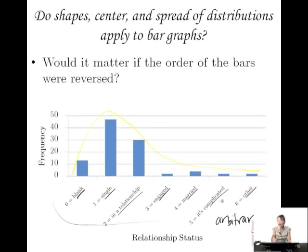There's no rule that says that we have to put these values in this order, because being blank, single, in a relationship, engaged, married, complicated, other, it doesn't really have a set order that corresponds to numbers. We might have some sort of order in our head, like being married is the most committed, being engaged is the second committed. We might have some sort of order that we want to put on it, but largely this is an arbitrary ordering. We could switch up these bars and that would be okay.